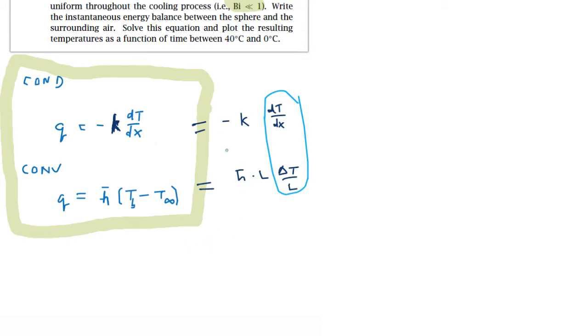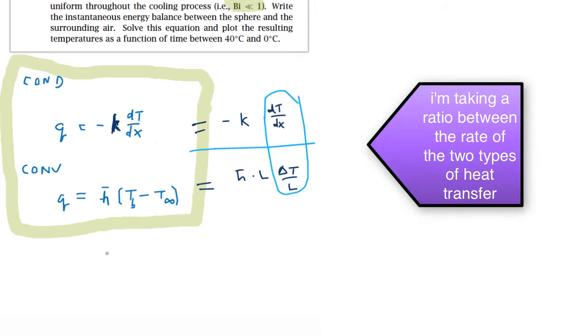Notice then if we were to take a ratio and ask ourselves, okay I have conduction and I have convection, let me take a ratio of those two.